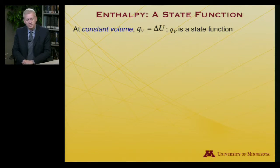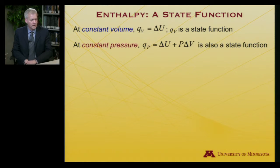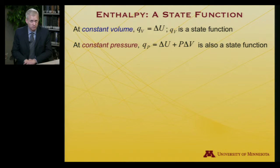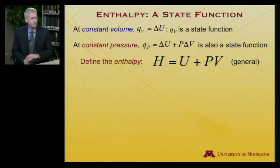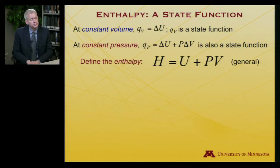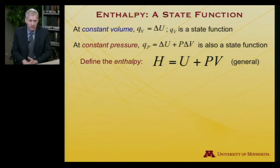At constant volume, QV is a state function equal to delta U. At constant pressure, QP is also a state function: delta U plus P delta V. We're going to give it a name — we're going to call it the enthalpy. More generally speaking, enthalpy, indicated by H, is equal to U plus P times V.